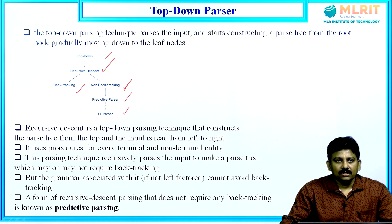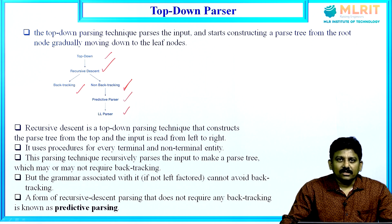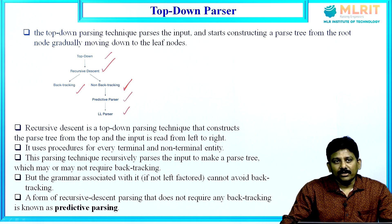Suppose if the grammar is not left factored, the grammar cannot avoid backtracking. That means if the grammar has more than one rule with the same prefixes, that grammar cannot avoid backtracking. A form of recursive descent parsing that does not require any backtracking is also known as predictive parsing.